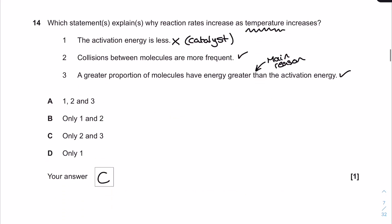Question 14. Which statements explain why reaction rates increase as temperature increases? Statement one is completely incorrect - that's what a catalyst does. Statements two and three are correct: collisions between molecules are more frequent, and a greater proportion of molecules have energy greater than the activation energy. They've brought up questions before asking for the main reason, and they identified the third statement as the main reason. But both two and three are actual reasons, so the correct answer was C, only two and three.